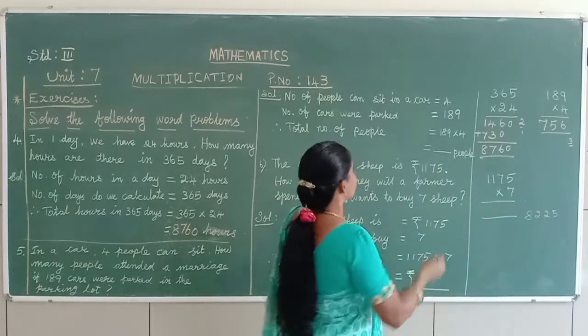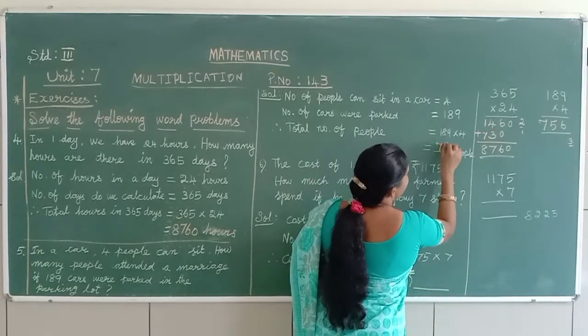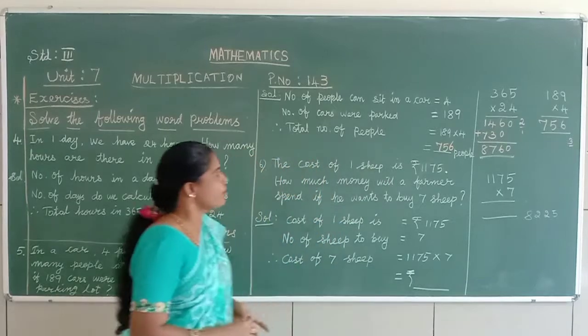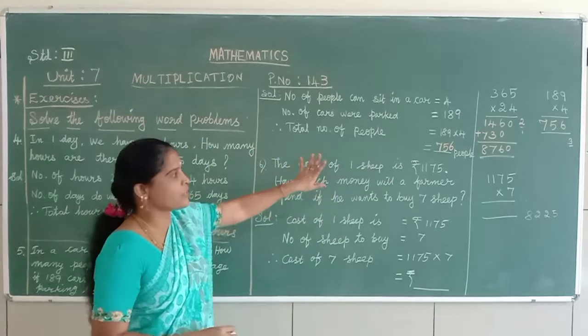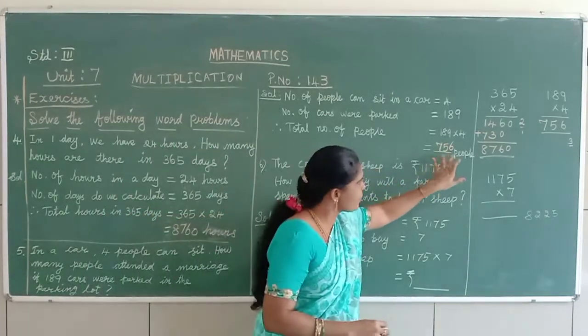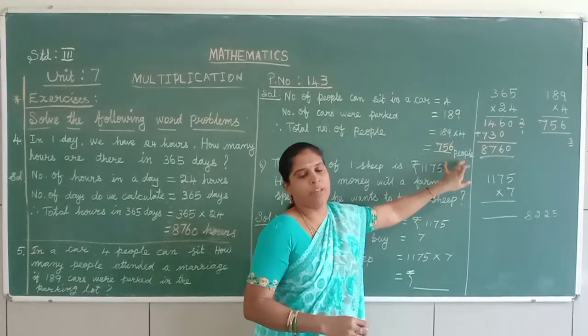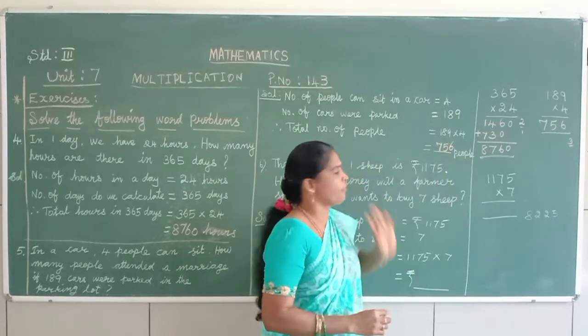So, you have to write 756. How many people they can attend in the function? 756 people. They were attended in the function.